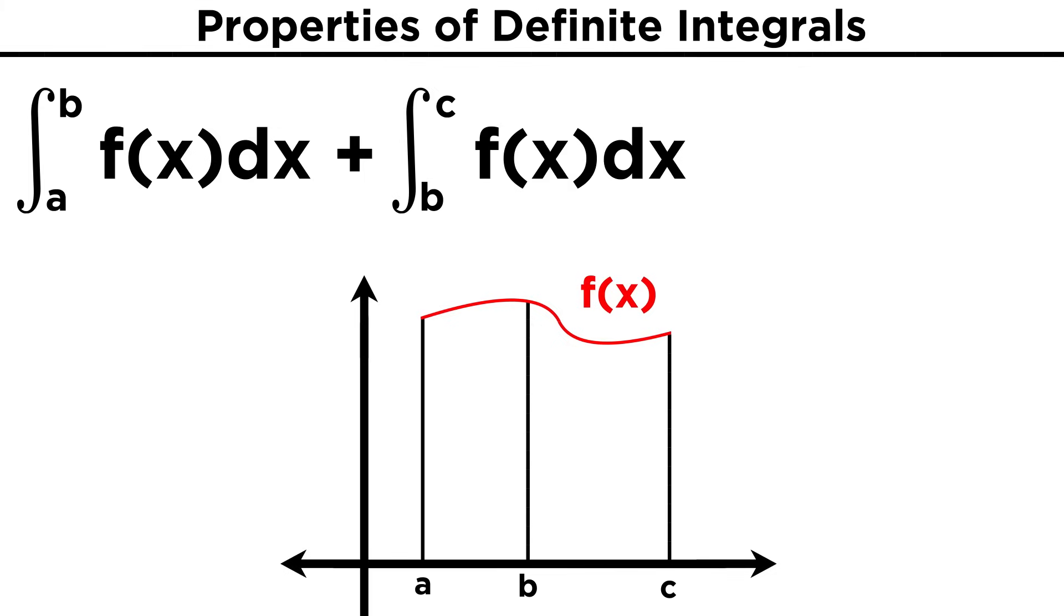Similarly, if we have two integrals of the same function over adjacent intervals, one from a to b and the other from b to c, the sum of these integrals is equal to the integral of the function over the whole interval from a to c. This is the same as saying that the area of this section plus the area of this section is equal to the total area under the curve. So that covers some properties regarding the limits of integration.